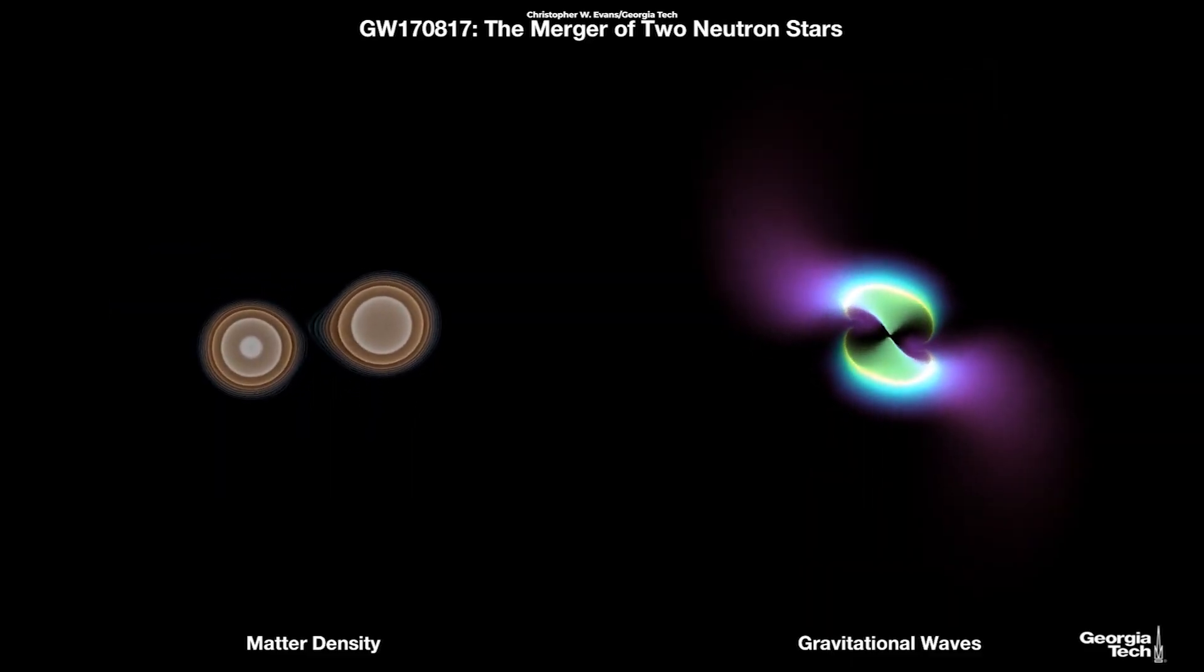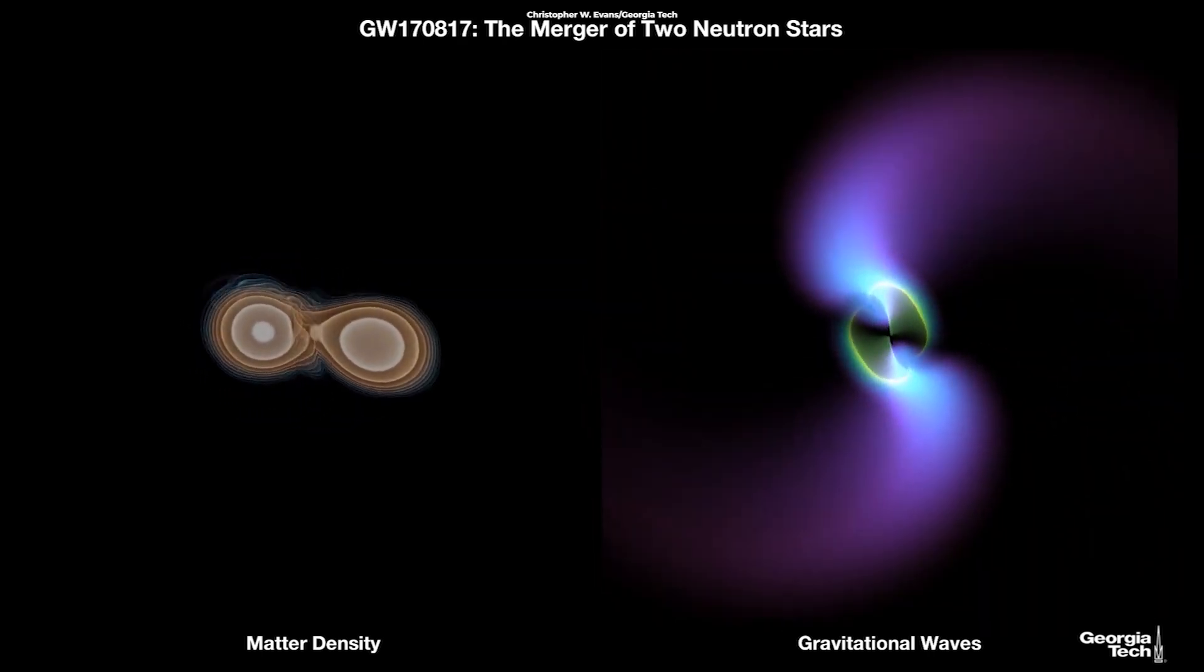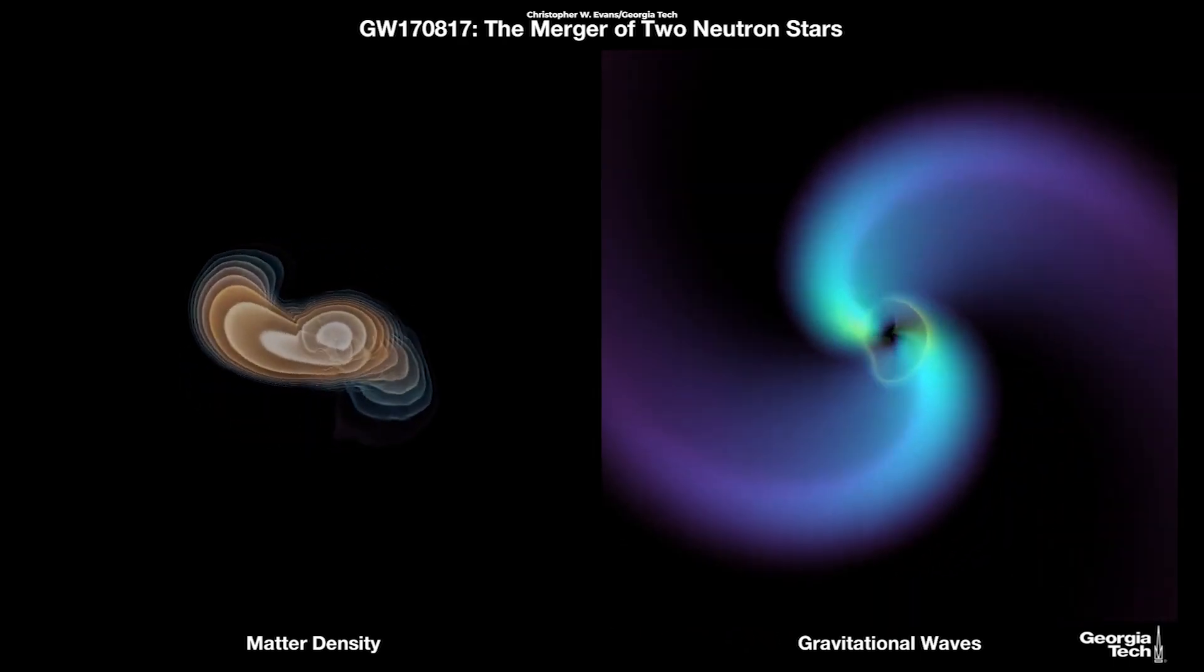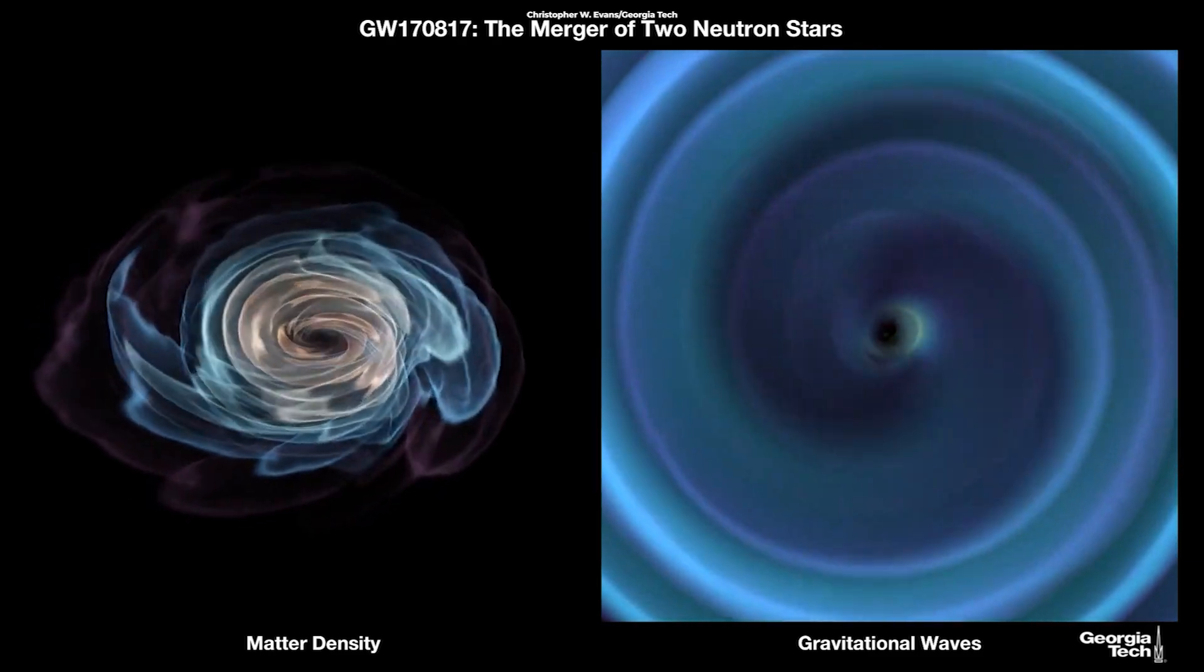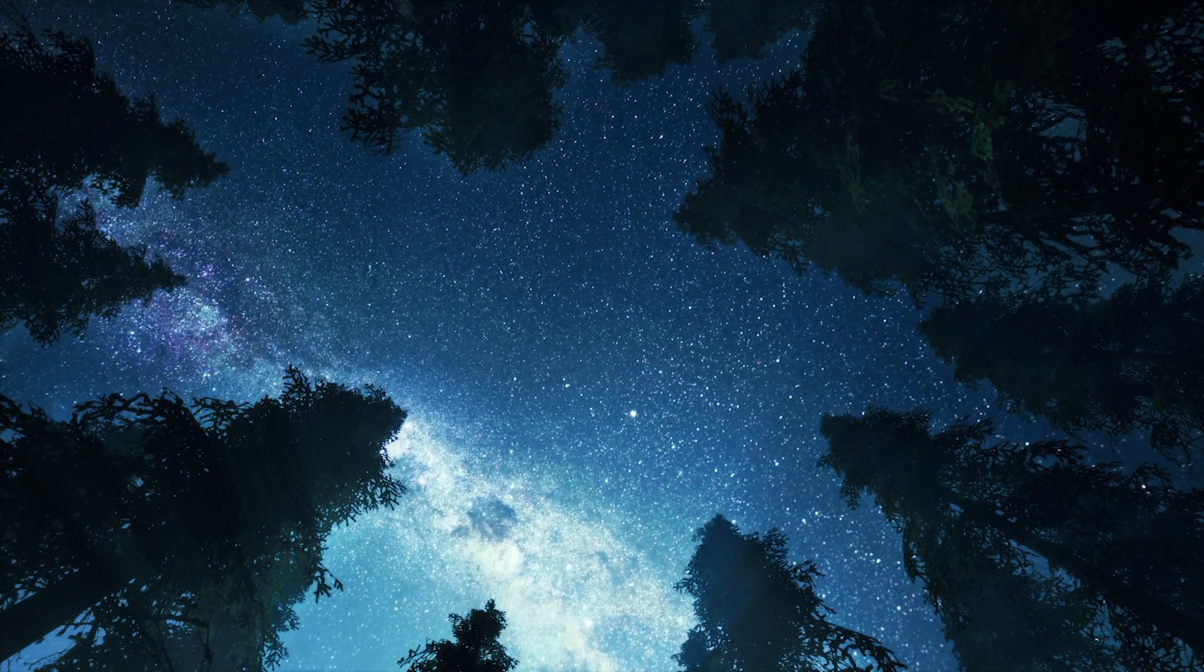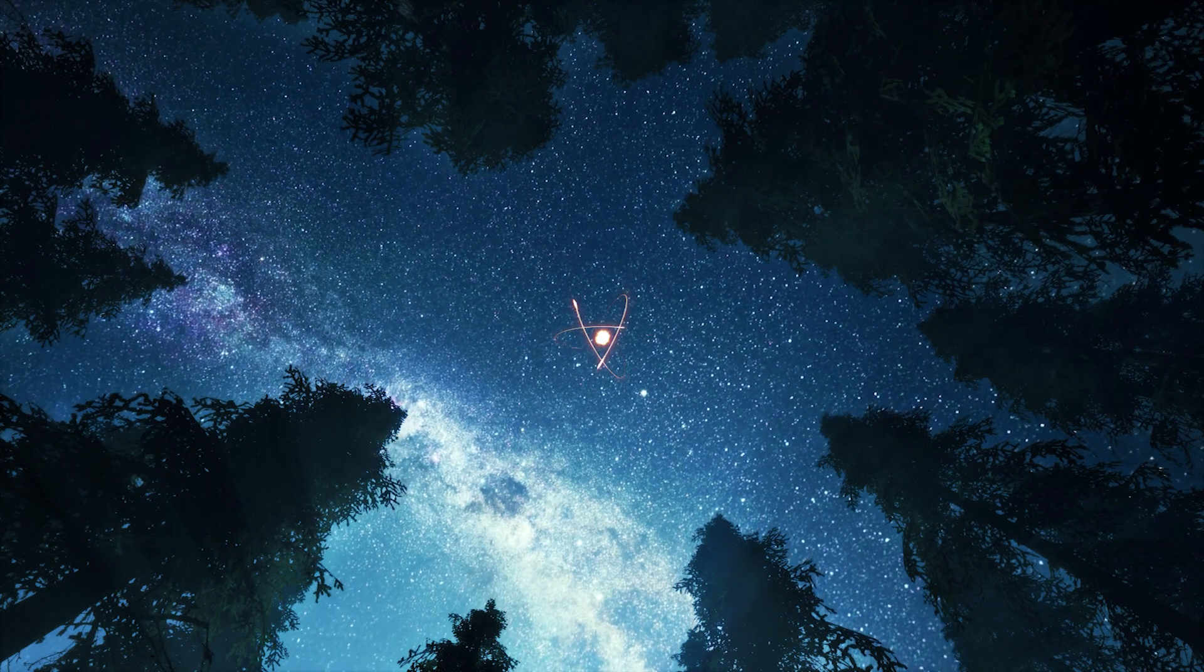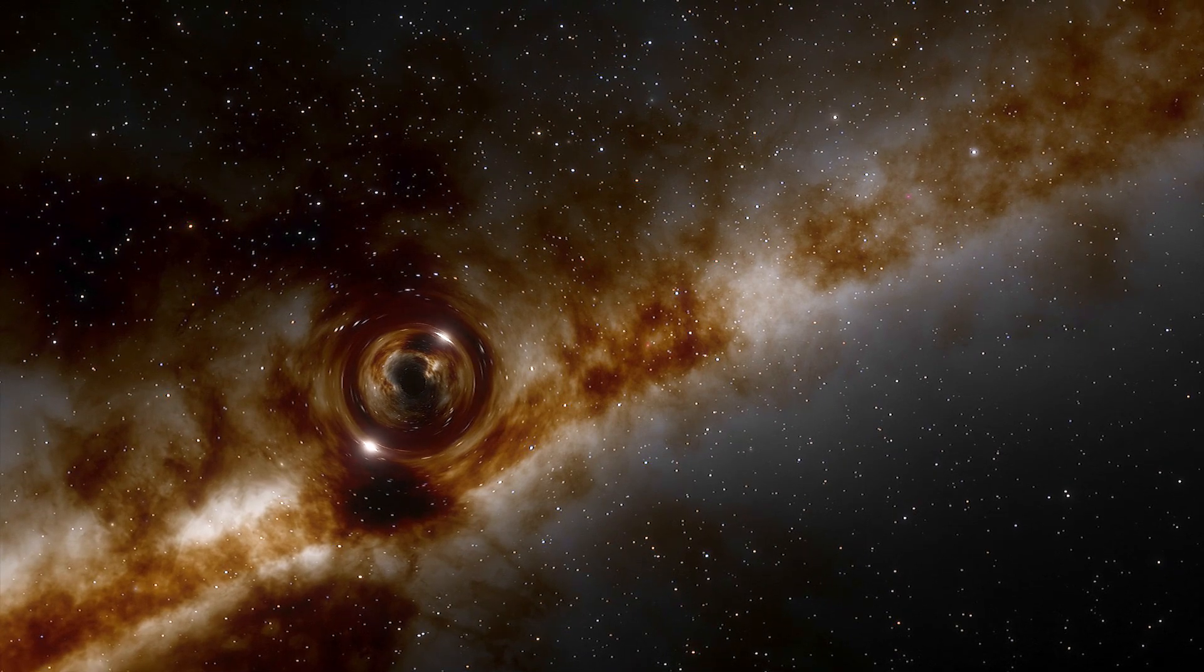Gravitational waves are created when enormous objects collide, causing ripples in the fabric of space, and these ripples are what the researchers have discovered. By the time the ripples reach us, they are tiny, less than the width of an atom.